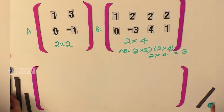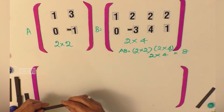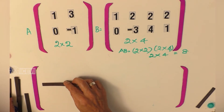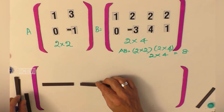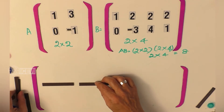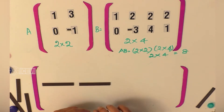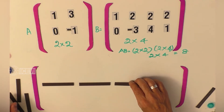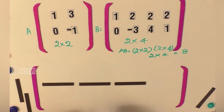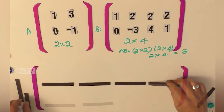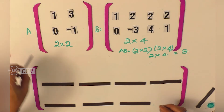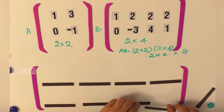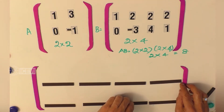We should help the child to conceptualize this. There are 2 rows in the new matrix and each row has 4 elements. Now let us fill the elements.